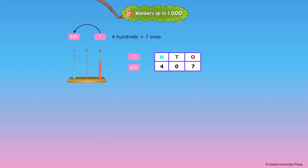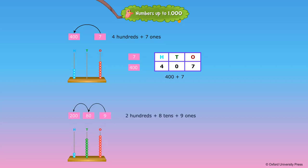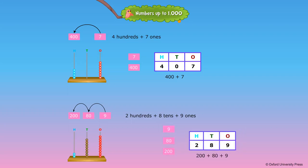Learning to form numbers: four hundreds plus seven ones equals four hundred and seven. Two hundreds plus eight tens plus nine ones equals two hundred and eighty-nine.